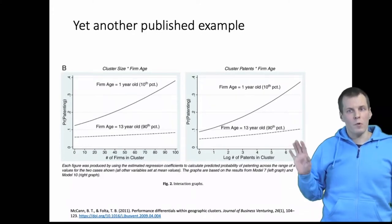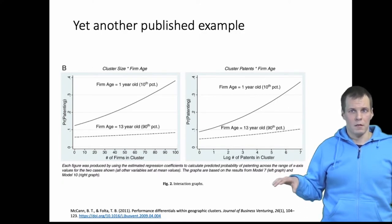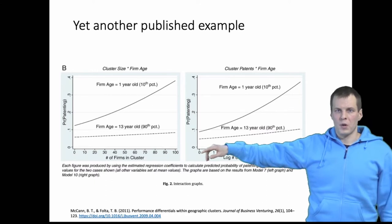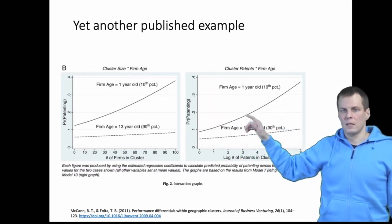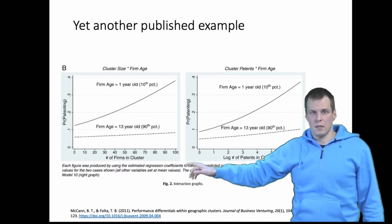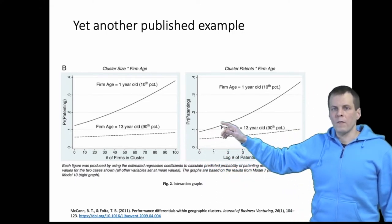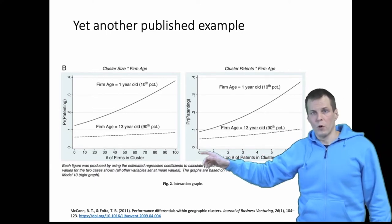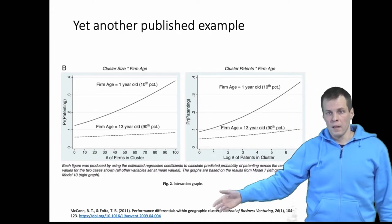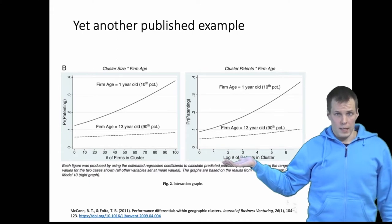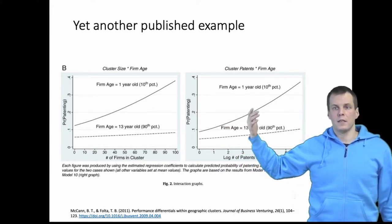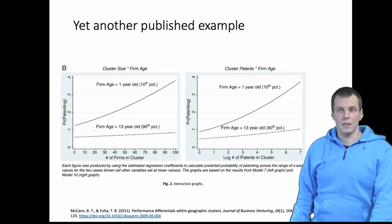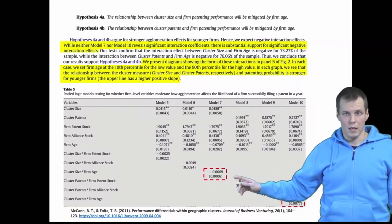Here is a published example of moderation effect confusion done right. Looking at two different curves — predictive probability of patenting on the y-axis, firm age on the x-axis, with panels for patents in a cluster and number of firms in a cluster — we can see that for younger firms the effect is positive and fairly strong, while for older firms the effect is pretty flat and not as strong. So the proper interpretation is that the size of clusters has a positive effect on the propensity of patenting, but the effect is stronger for younger companies. What's interesting is that the moderation coefficients in the model are non-significant and very close to zero.